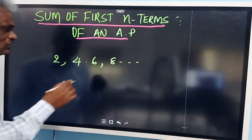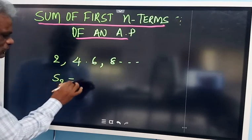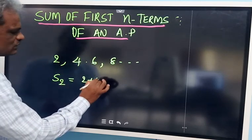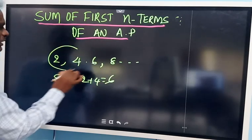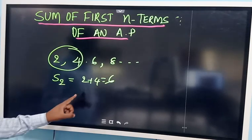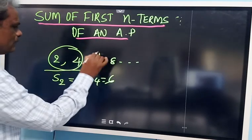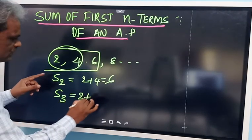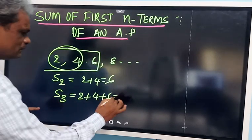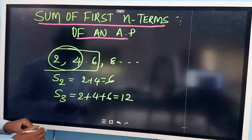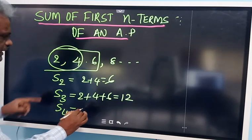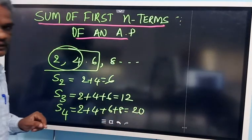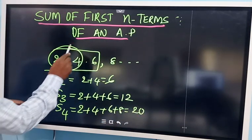If I want the sum of first 2 terms, I write S2. Sum of first 2 terms means S2, which is 2 plus 4, equal to 6. If I add 3 numbers, I write S3 — sum of first 3 terms: 2 plus 4 plus 6 equals 12. If I add sum of first 4 terms, it is 2 plus 4 plus 6 plus 8, which becomes 20.